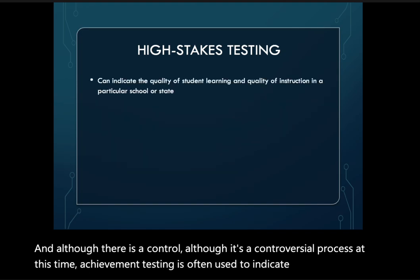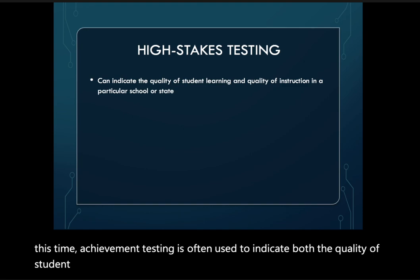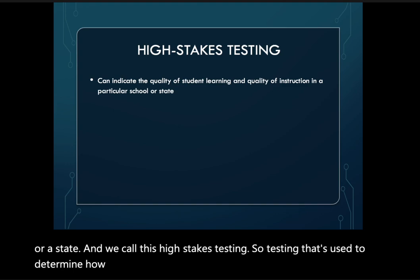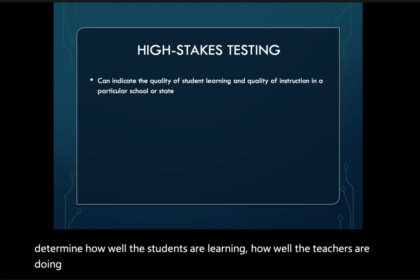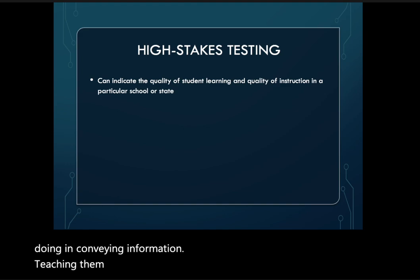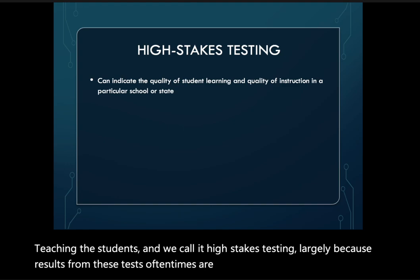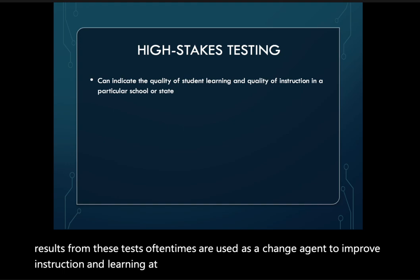Although it is a controversial process, achievement testing is often used to indicate both the quality of student learning and the quality of instruction in a particular school or state — and we call this high-stakes testing. It's called high-stakes testing because results are often used as a change agent to improve instruction and learning, especially at elementary, middle, and high school levels.